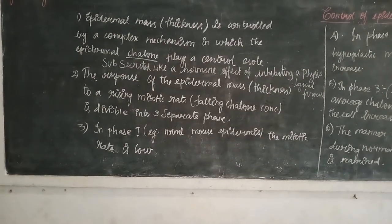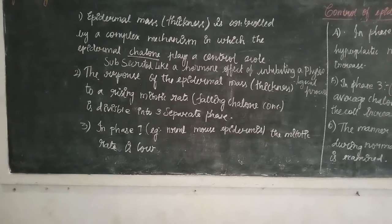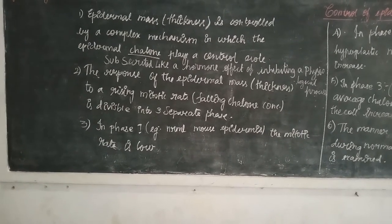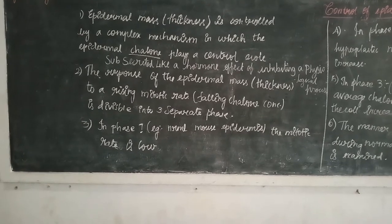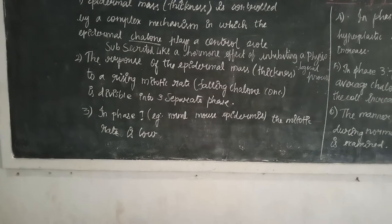Next we are going to see the response. The response of the epidermal mass to a rise in mitotic rate with falling cologne concentration is divided into three separate phases. We are going to see three different separate phases in this epidermis control.